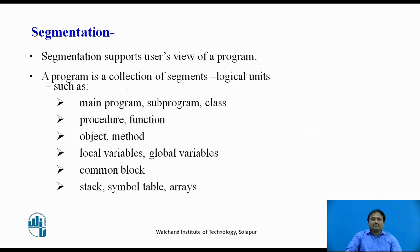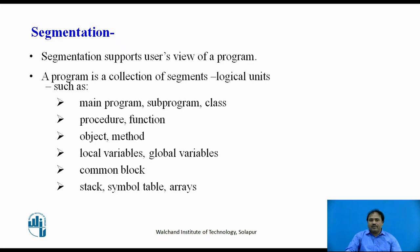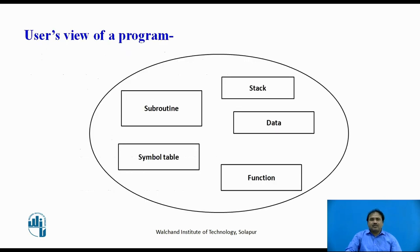Segmentation is very important. If we keep the user's point of view in mind, it is beneficial to split the program into small pieces, and a program normally carries different types of requirements: a main program, procedures or functions, objects, local and global variables, a stack, and data blocks common to multiple code sections. From the user's perspective, a process is split into segments such as stack, data, functions, subroutines, and symbol tables.